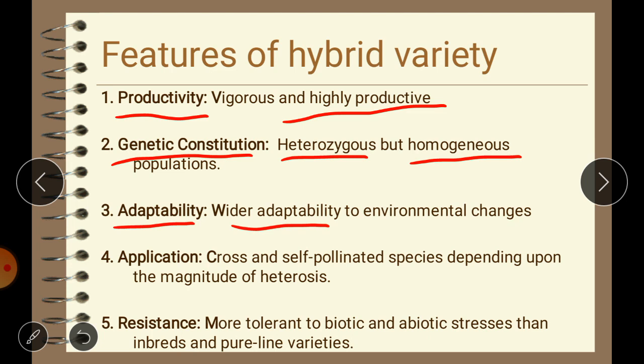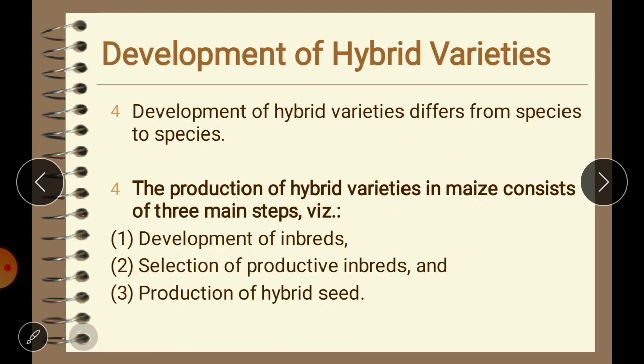The fourth feature is application. Hybrids can be developed in both cross- and self-pollinated species depending upon the magnitude of heterosis. However, these hybrids are more common in cross-pollinated species than self-pollinated ones. The fifth feature is resistance — hybrids are generally more tolerant to biotic and abiotic stresses compared to inbred line and pure line varieties because of their high buffering capacity and broad genetic base, giving them more power to resist biotic and abiotic stresses.